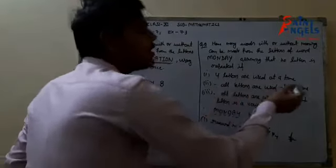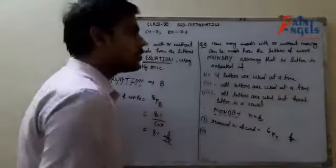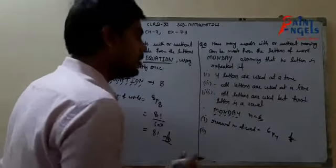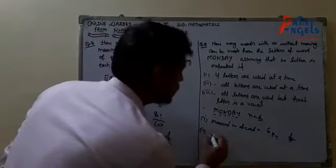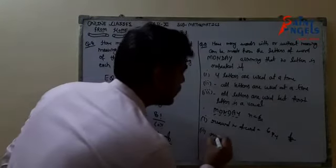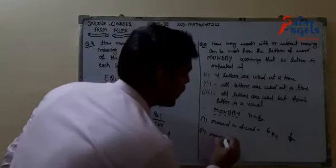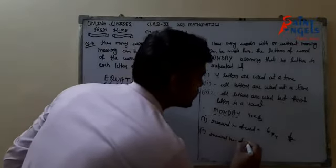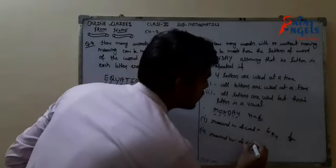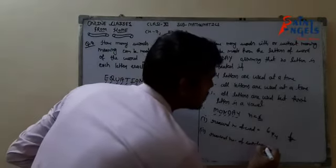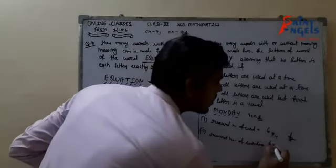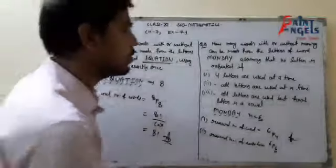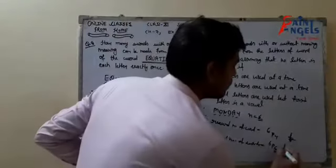The second part: all letters are used at a time. So here we have to arrange all 6 letters. The required number of words = 6P6. We have to arrange all 6 letters out of 6 letters.